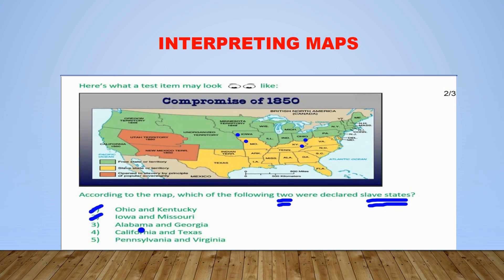When we look at option number three, we have Alabama and Georgia. We're going to identify these two states on our map. We have Alabama here and Georgia here. We see that both of these states are located in the yellow section of our map, indicating that both are slave states. And so therefore, in terms of answering our question — which reads, according to the map, which of the following two were declared slave states — we know that option number three is the correct choice, according to our map key and map. And so therefore, we are going to eliminate options number four and five because they do not apply.